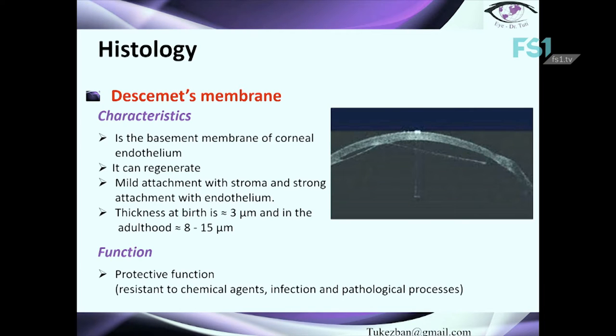Descemet's membrane is the basement membrane of the corneal endothelium. It has the ability to regenerate, with very mild attachment to the stroma and strong attachment to the endothelium. Thickness is between 8 and 15 microns, and this thickness increases with age — in newborns it is only 3 microns. The main function is protection, as this is the strongest layer in the cornea, being highly resistant to chemical agents, infection, and other pathological processes.